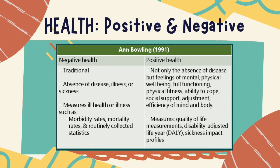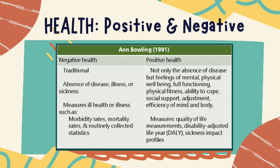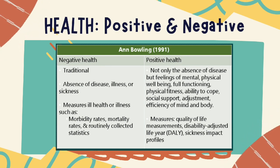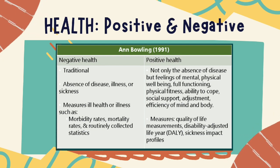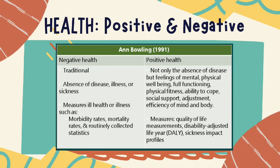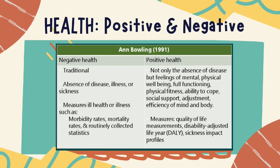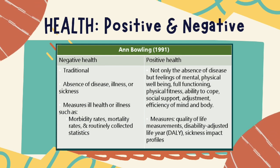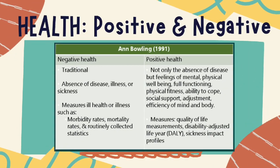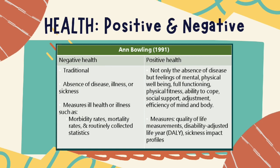The DALY extends the concept of potential years of life lost due to premature death to include the equivalent years of healthy life lost by virtue of being in states of poor health or disability. In so doing, mortality and morbidity are combined into a single common metric. Traditionally, health liabilities were expressed using one measure — the expected or average number of years of life lost — which does not take any impact of disability into account, expressed as years lived with disability, or the YLD.